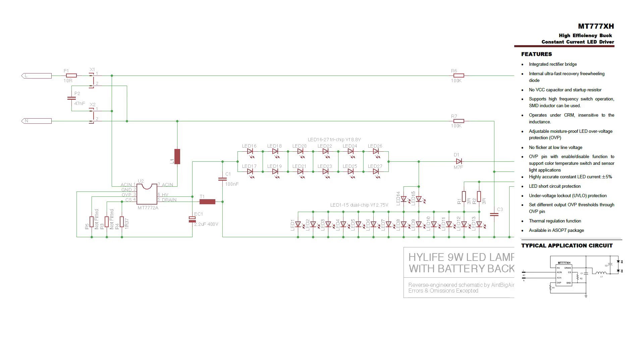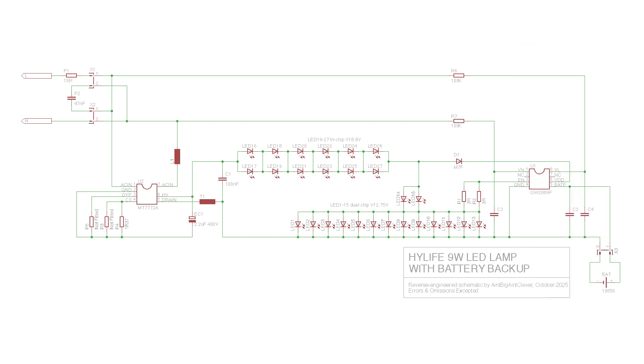However, normally for the MT7772A that connection from the LED cathodes will go around to the connection between C1 and T1. In this case though it's going via the third pair of LEDs and all of the battery supply LEDs. What those LEDs will of course do is clamp the anode of D1 to a maximum of 5.5 volts above ground.